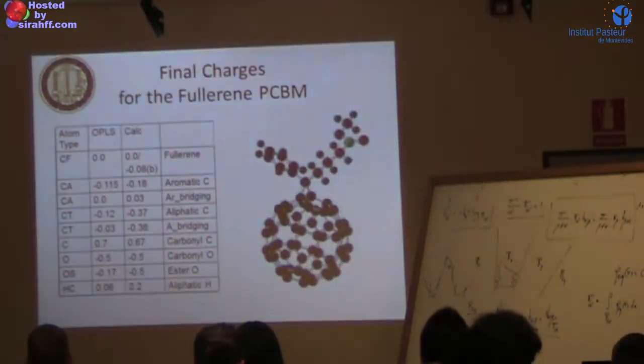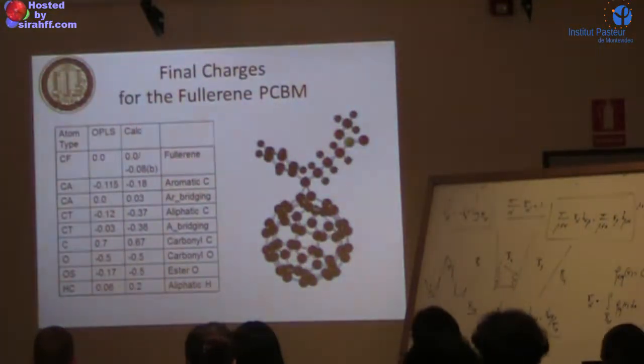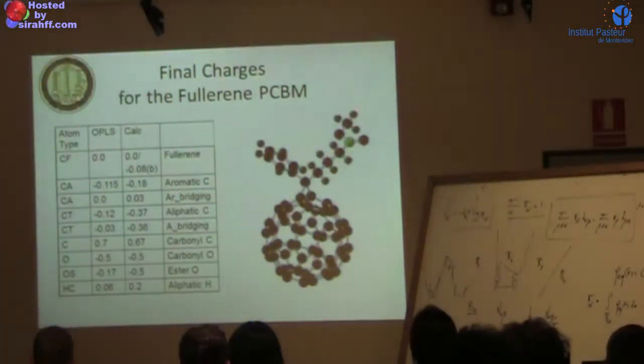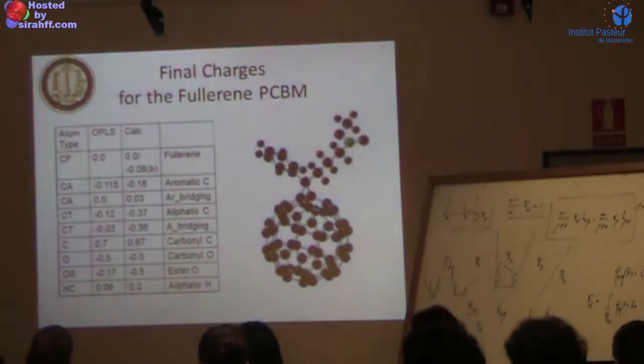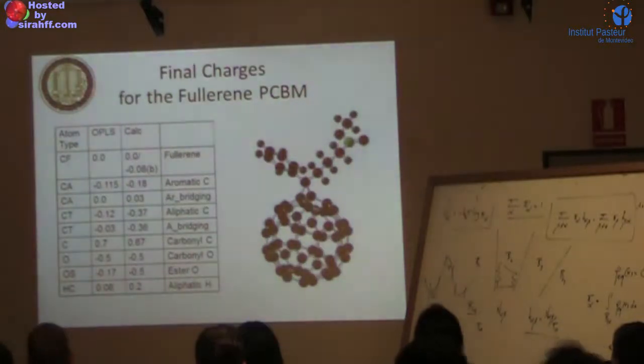This is the real charge distribution from quantum chemistry. The cage itself is essentially uncharged. The hydrogens are slightly positive, the carbons slightly negative. This side group is weakly polar. One of the main things for this side group is that it makes C60 dissolve in some solvents. C60 is a black powder, very hard to dissolve, but with this side chain it's easier to dissolve to some extent.